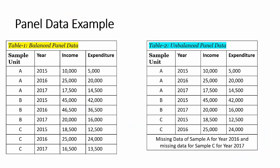Let's take an example of panel data. The first table, Table 1, is called balanced panel data. Panel data could be balanced or unbalanced. You can see here that we have different sample units like A, B, and C — which could represent a particular individual, person, or similar type of entity.